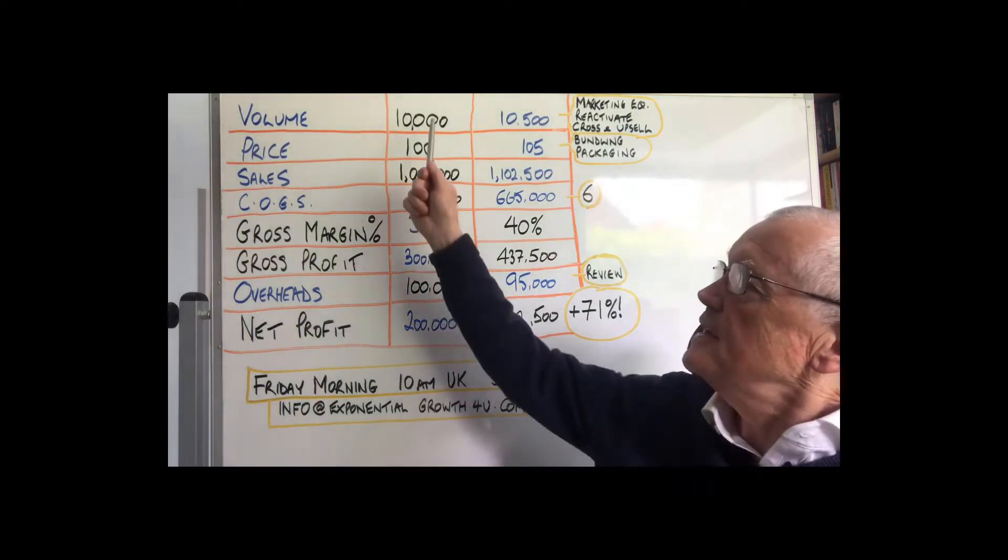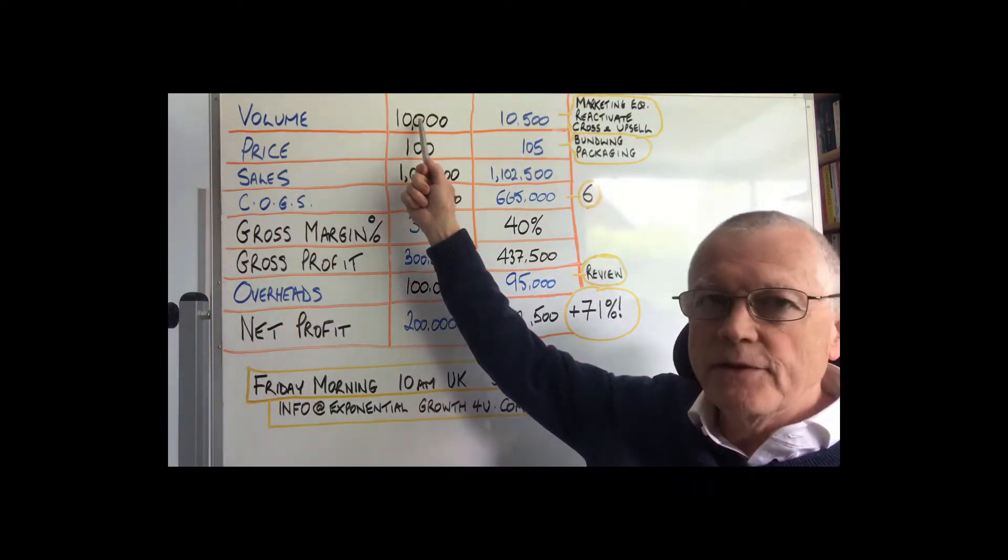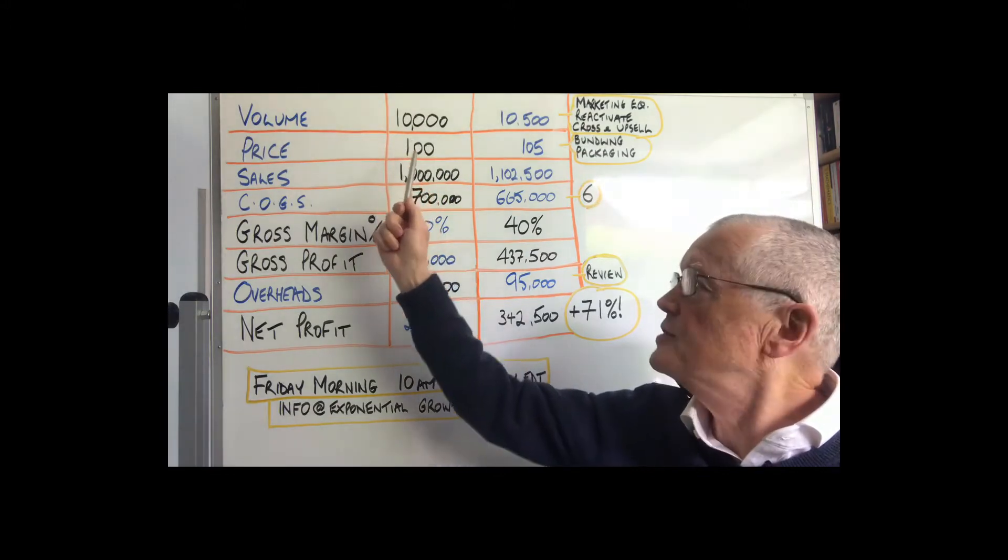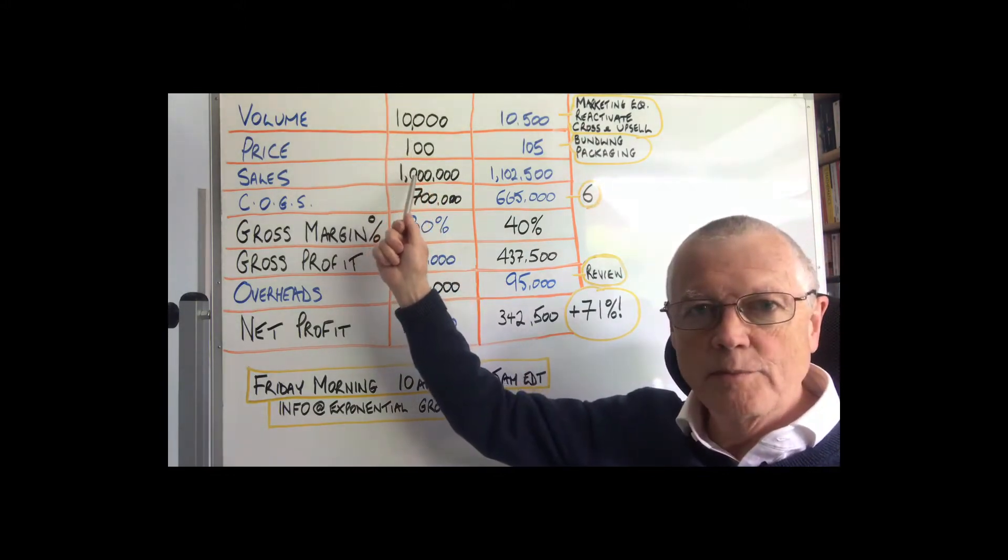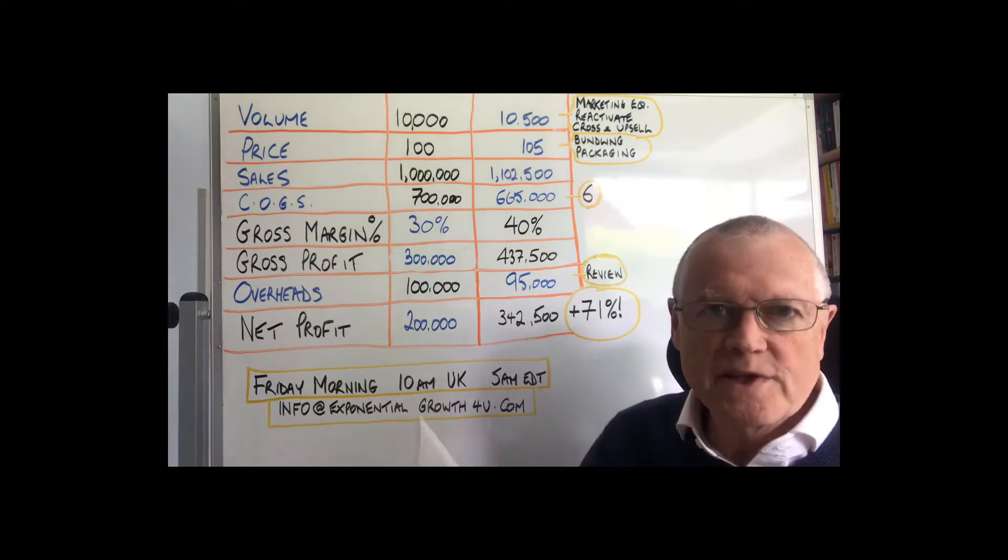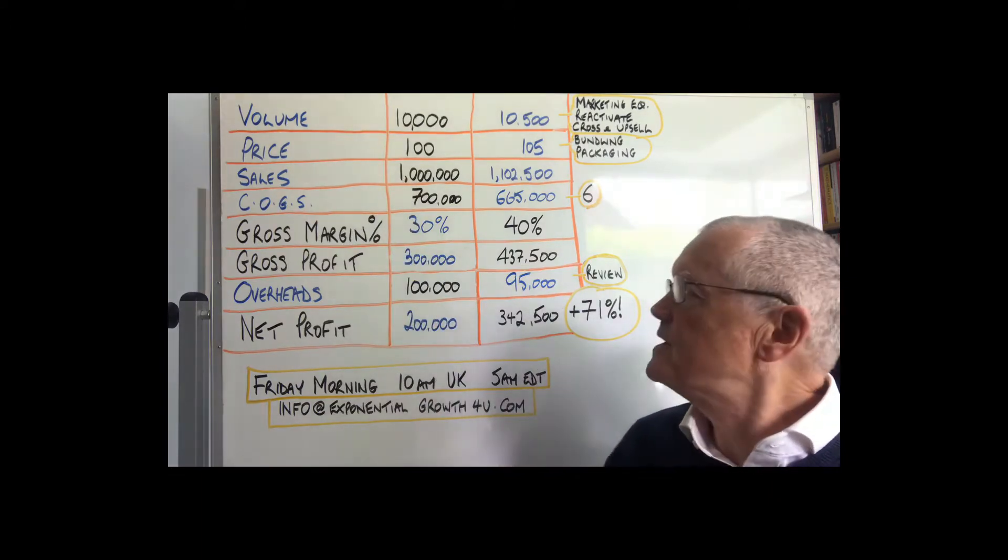So in this instance here we're selling 10,000 items for a hundred dollars or pounds each, which would give us our turnover of a million. Typical small business, a successful small business.